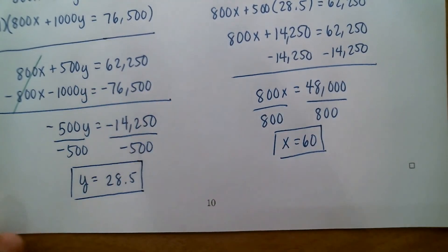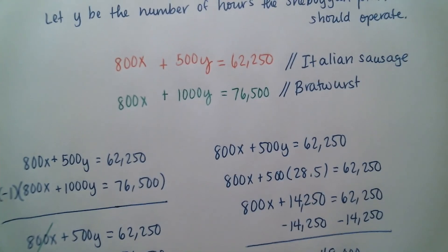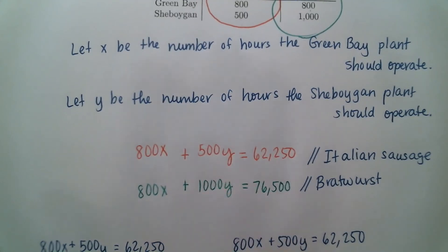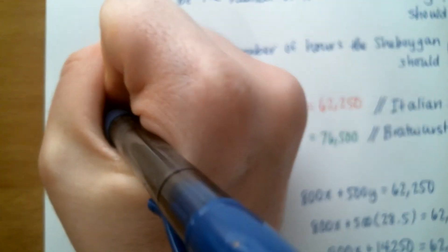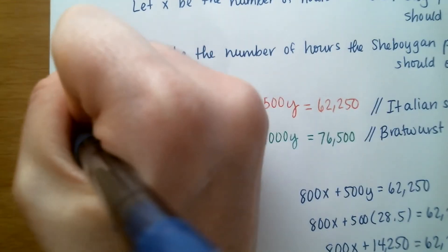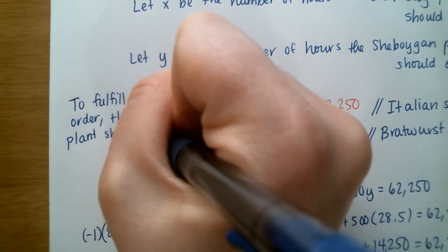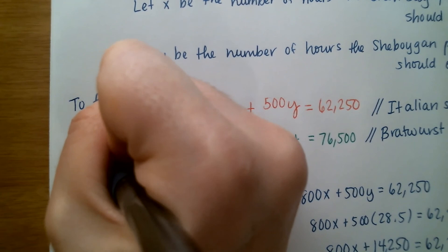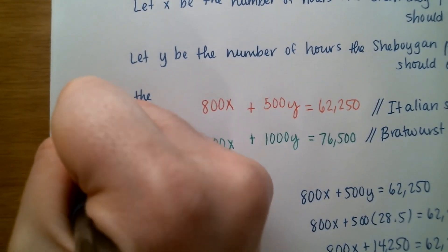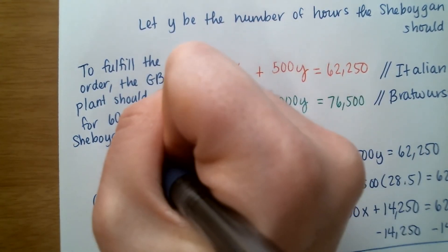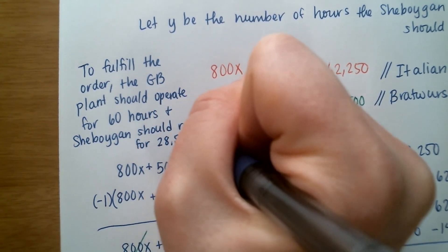So the solution to the system is X = 60 and Y = 28.5. Since this is a word problem, write the answer in context: X represents the hours the Green Bay plant should operate, and Y represents the hours the Sheboygan plant should operate. To fulfill the order, the Green Bay plant should operate for 60 hours, and Sheboygan should run for 28.5 hours.